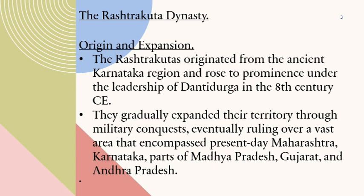Origin and Expansion: The Rashtrakutas originated from the ancient Karnataka region and rose to prominence under the leadership of Dantidurga in the 8th century CE. They gradually expanded their territory through military conquests, eventually ruling over a vast area that encompassed present-day Maharashtra, Karnataka, parts of Madhya Pradesh, Gujarat, and Andhra Pradesh.